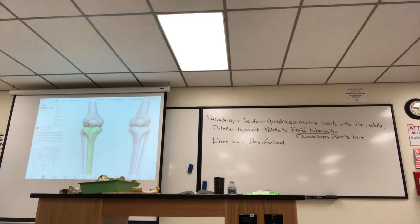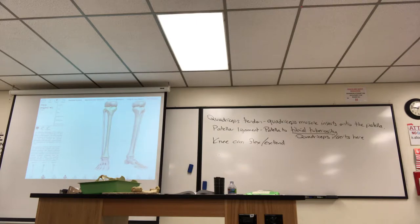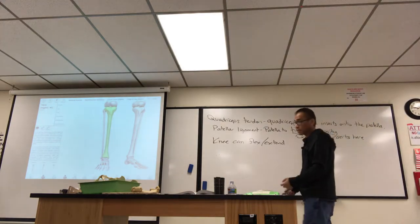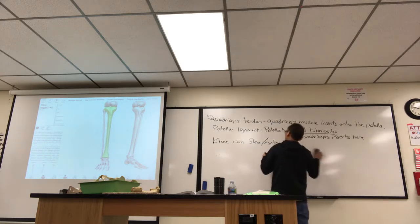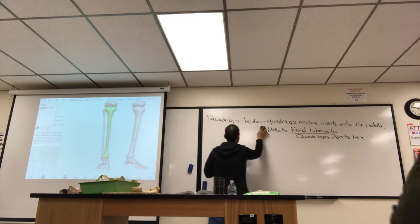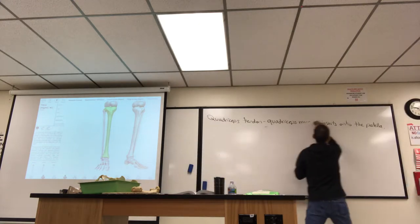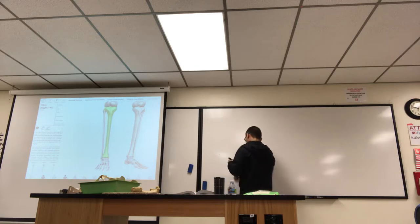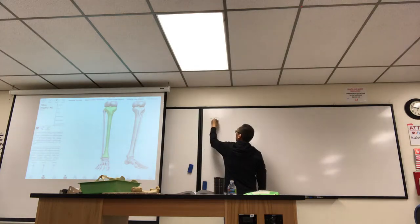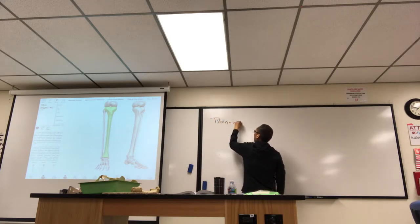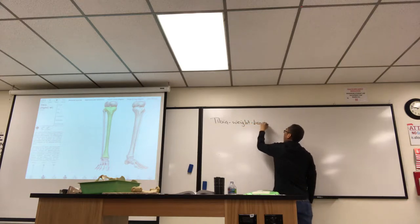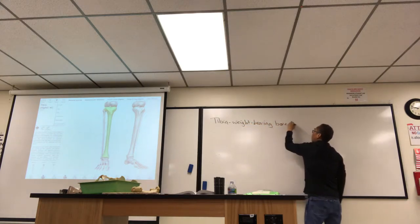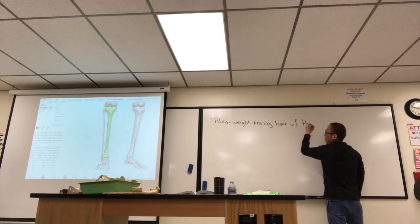Let's talk about just the tibia now. Of your two leg bones, the tibia is your weight-bearing bone. You can see how it articulates in the skeleton. Remember, in anatomy, the leg is the region between the knee and the ankle.